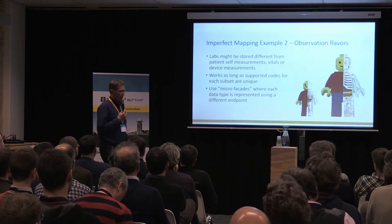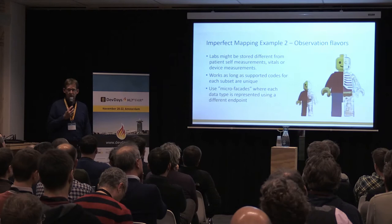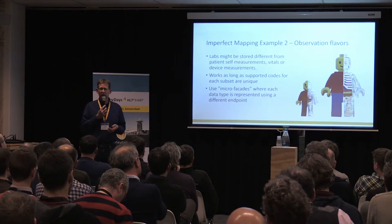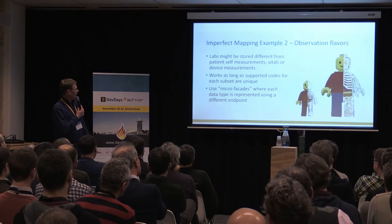Another example: you might have lab orders and device measurements or patient self-measurements stored in different internal data types. I haven't found the perfect solution. If you want a consistently working interface — where when you query you get a set of identifiers and any operation behaves consistently — those different observation types may need to be exposed on different endpoints. I have no way to always merge them into a perfectly working single endpoint.